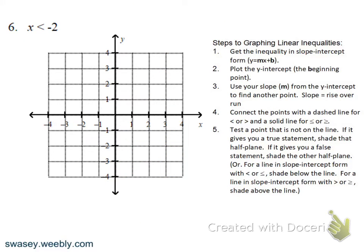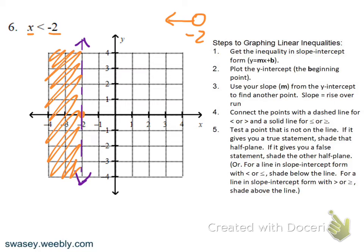This next example is not in slope-intercept — we don't even see a y. Think back to graphing equations: we find negative two on the x-axis, because that's the only variable, and draw a vertical line — dashed in this case. Think of a number line: we'd have an open circle at negative two and shade to the left. So here we shade to the left. For vertical lines, less than means shade left and greater than means shade right — you can't use above/below for vertical lines.